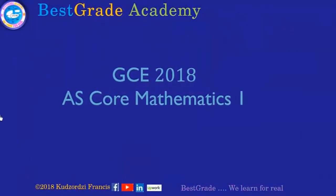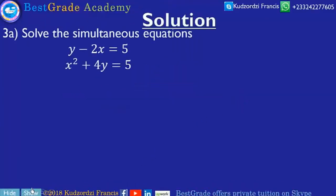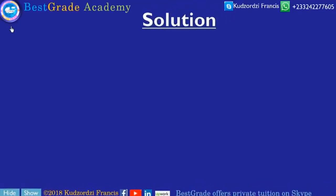GCE 2018 AS Core Mathematics 1, Module 1. We are looking at question 3A, solving the simultaneous equations: y minus 2x equals 5, and x squared plus 4y equals 5.